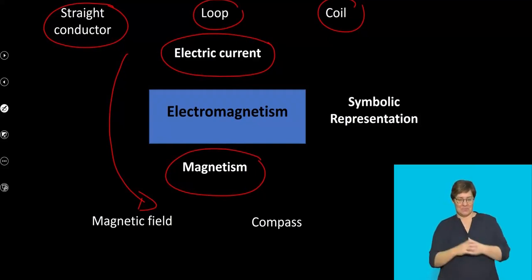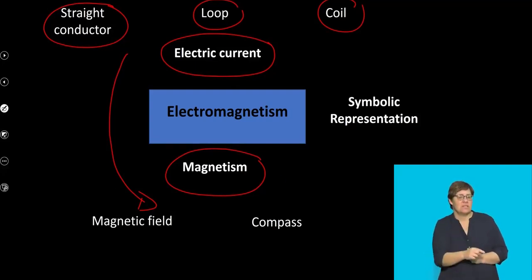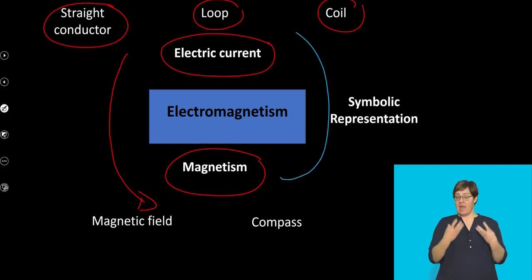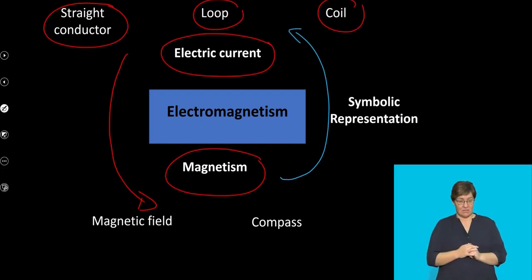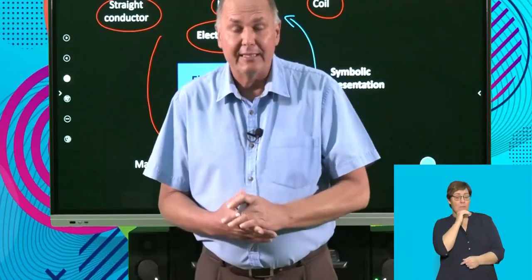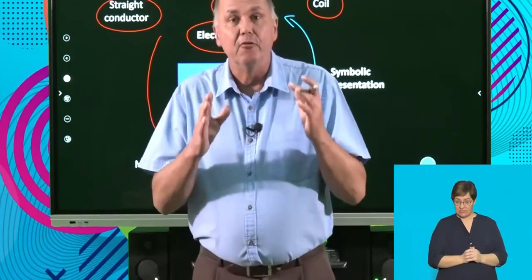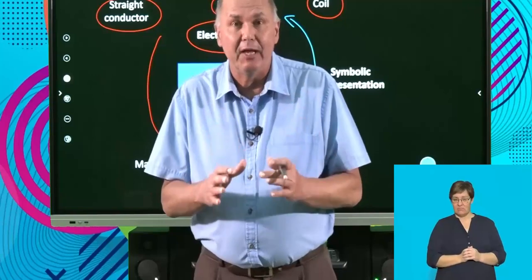There is another relationship: if we have a magnetic field, can we produce some sort of electric current? That's known as electromagnetic induction. We'll have a look at that a little later. Let's start by looking at the first type of relationship.